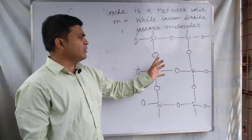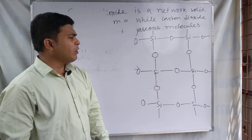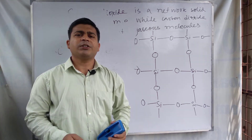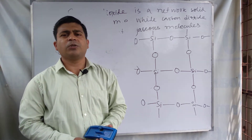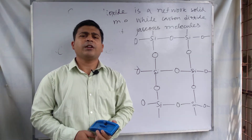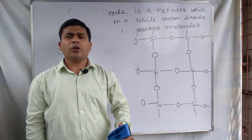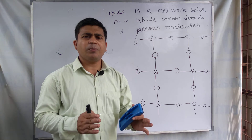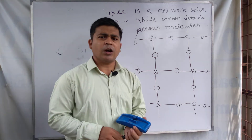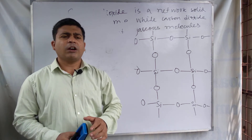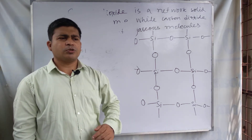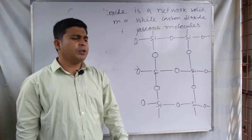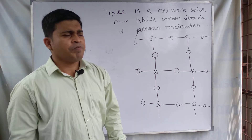Due to this network structure, silicon dioxide is a solid substance with a high melting point. Carbon dioxide is a gaseous substance at room temperature, containing discrete single molecules that do not form any network structure. This is the same reason why carbon dioxide cannot form a solid substance.